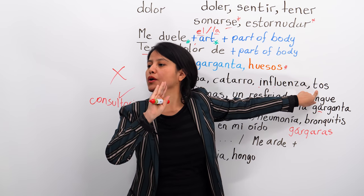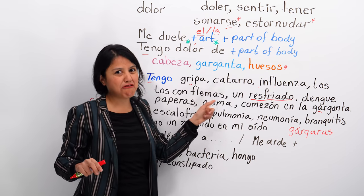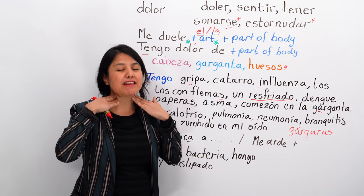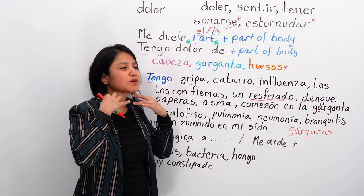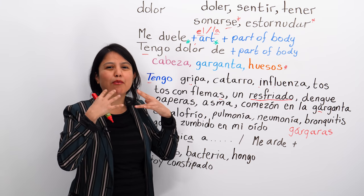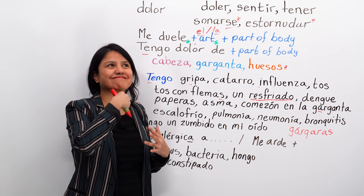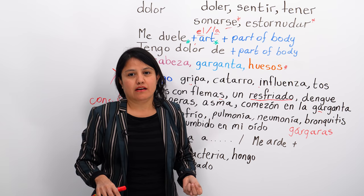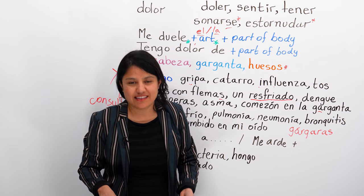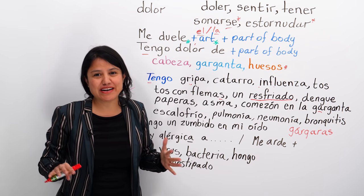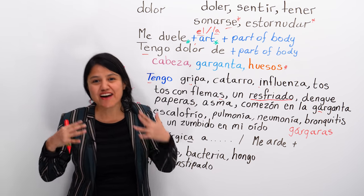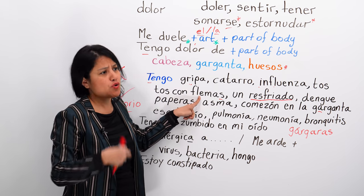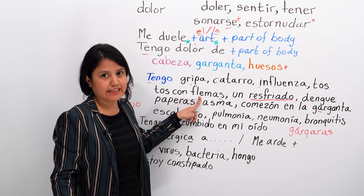Maybe you have tengo tos con flema o con flemas — that is when you have phlegm coming out. Flema is when you have those unpleasant bubbles coming from your respiratory system and you have to clear them out.